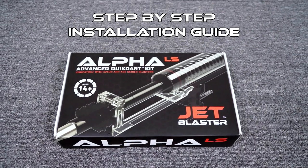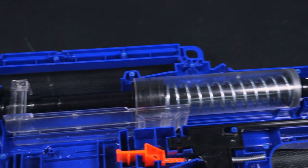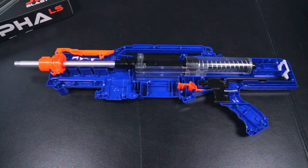Welcome to the Alfa Step-by-Step Installation Guide. The Alfa LS kit is a complete drop-in kit developed to enhance the performance of your Nexus 2 or Longshot with half-length foam darts.